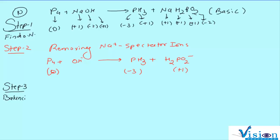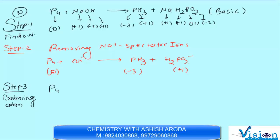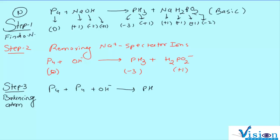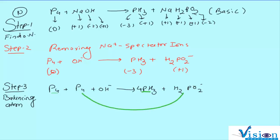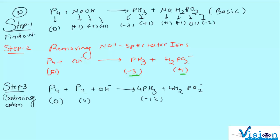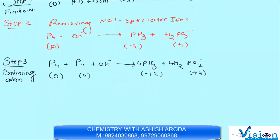Step number 3: balancing atoms. P₄ + P₄ + OH⁻ gives PH₃ + H₂PO₂⁻. यहाँ P कितने हैं — 4, और यहाँ 1, so 4 से multiply करेंगे। Oxidation number को भी उसी number से multiply करना है — 1 का 0 था, 4 का 0; और minus 3 का minus 12 और plus 1 का plus 4।